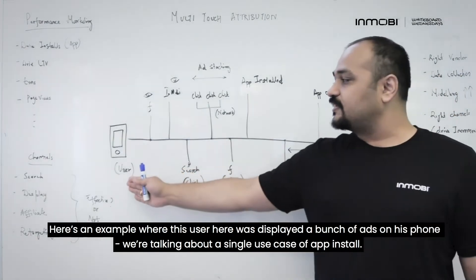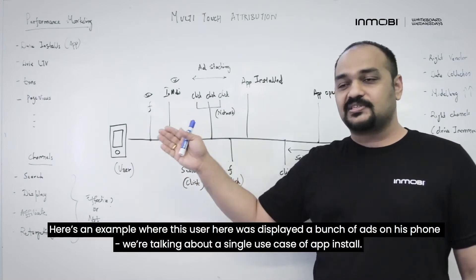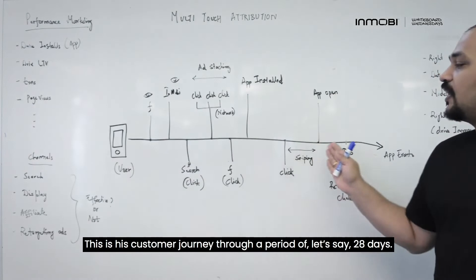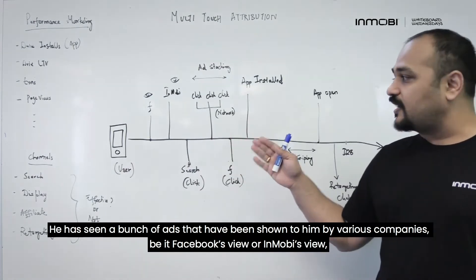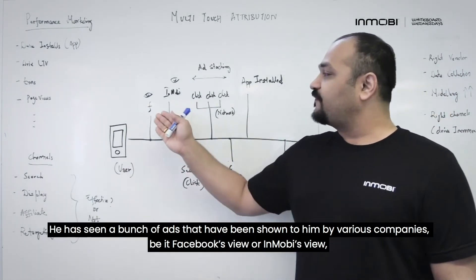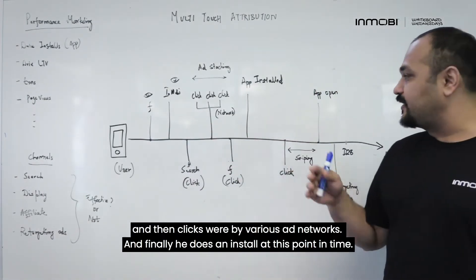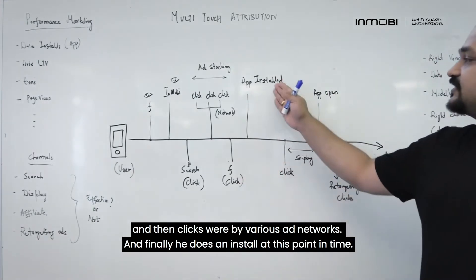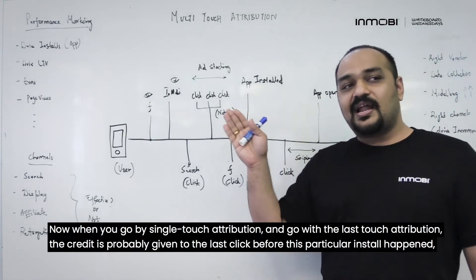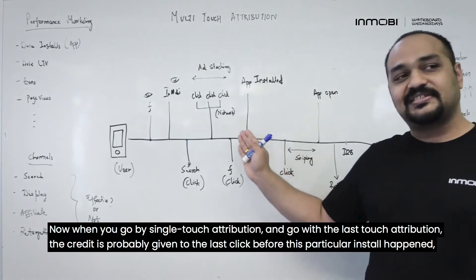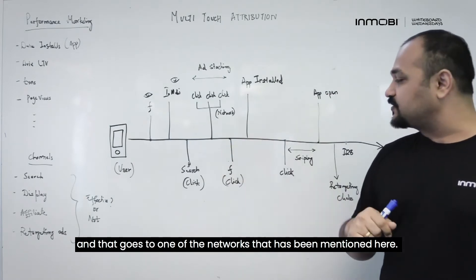Here's an example where a user was displayed a bunch of ads on his phone — we are talking about a single use case of app install. This is his customer journey through a period of let's say 28 days. He has seen a bunch of ads shown by various companies, be it Facebook's view or InMobi's view, and then clicks by various ad networks. Finally he does an install. Now when you go by single-touch attribution with last touch, the credit is given to the last click before the install happened, and that goes to one of the networks mentioned.